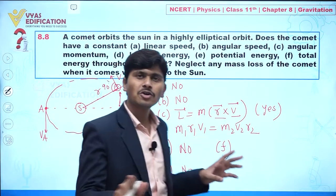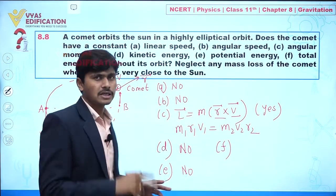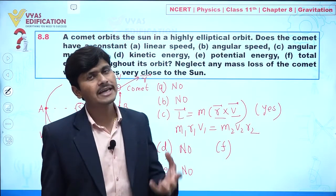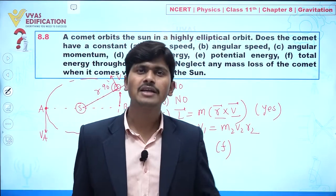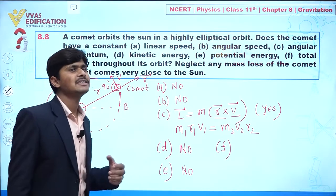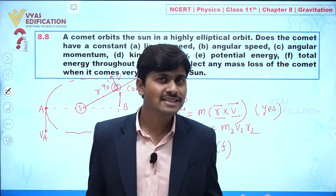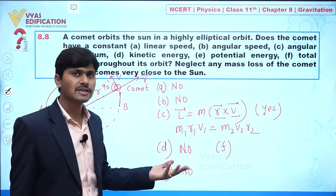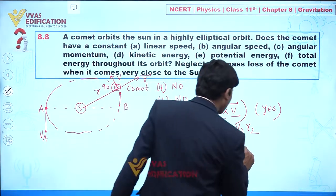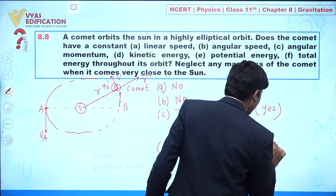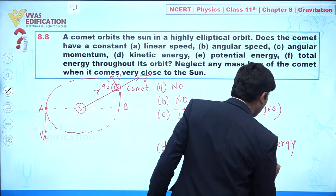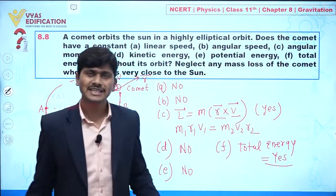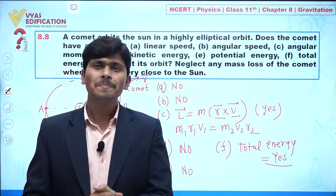Part (f): Total energy. Total energy is the sum of kinetic energy and potential energy. When potential energy decreases, kinetic energy increases, and vice versa. Therefore, total energy always remains constant throughout the orbit.